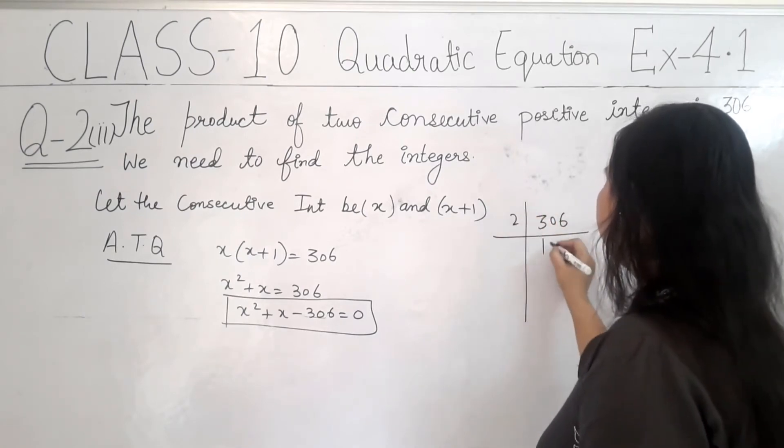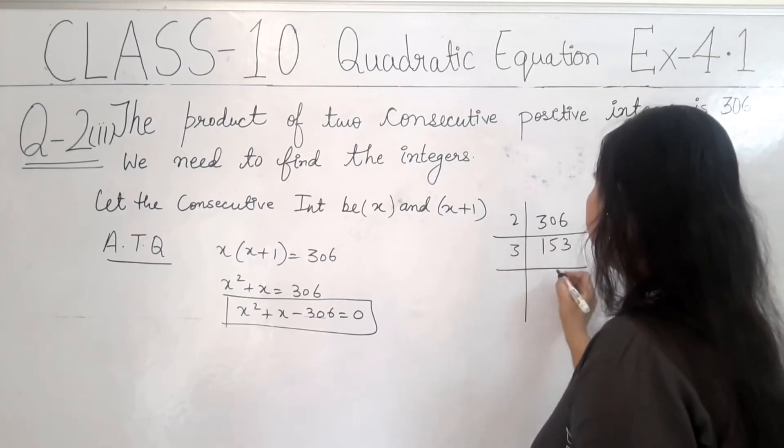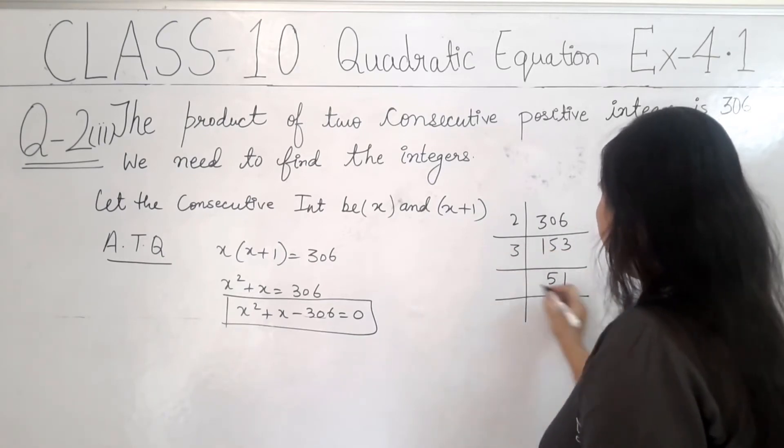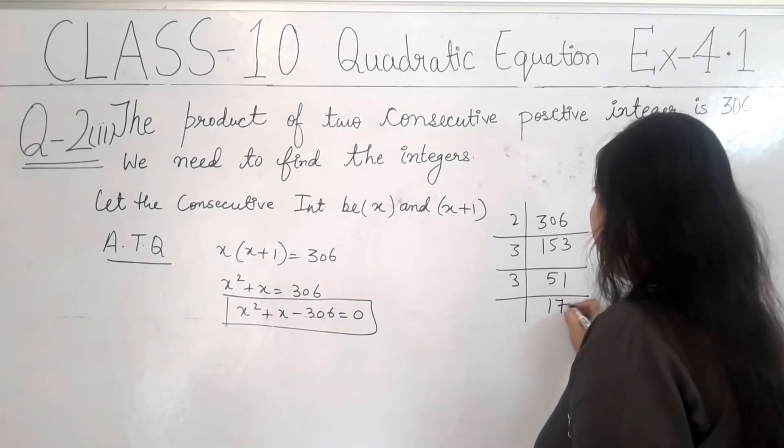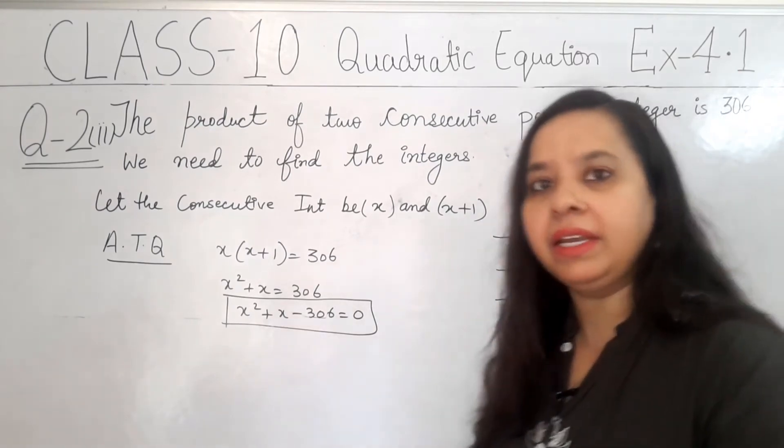How do we look at the factors of 306? We can do from 2: 153. Then, we can do from 3: 51. Then, again, we can do from 3: 17. So, you can see that 2, 3 gives 6, 3 gives 18. 18 and 17 we get, right? 18 and 17.